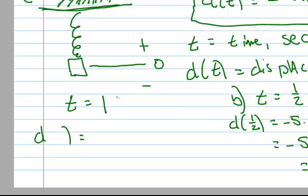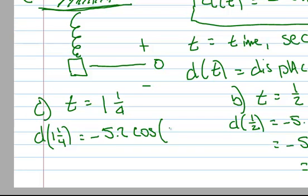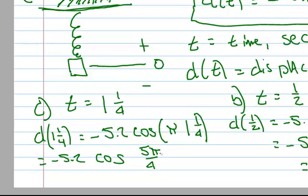Part C, t is 1 and 1 quarter. So, this is d at 1 and 1 quarter. We're going to put that in for t. So, d of 1 and 1 quarter is equal to negative 5.2 times the cosine of pi times 1 and 1 quarter. So, that equals negative 5.2 times the cosine. Well, that's going to be 5 pi over 4. 1 and 1 quarter is 5 fourths. So, that's 5 pi over 4.